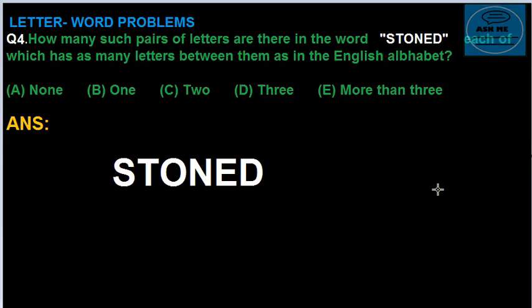Hello guys, welcome back. Today we are on question number four: how many such pairs of letters are there in the word STONES? The given answer options are: A - none, B - 1, C - 2, D - 3, E - more than 3.